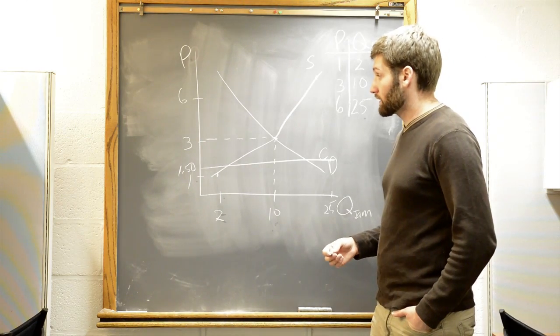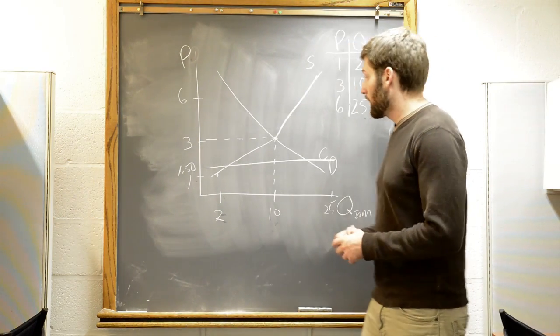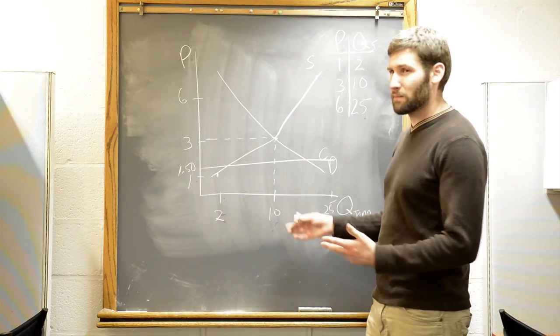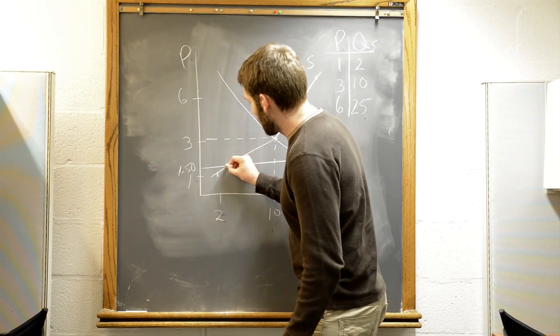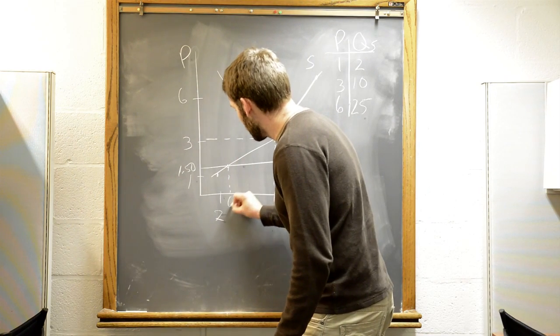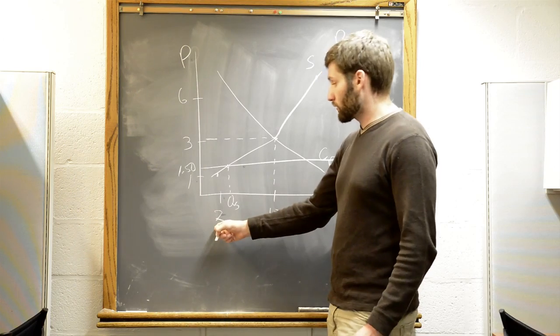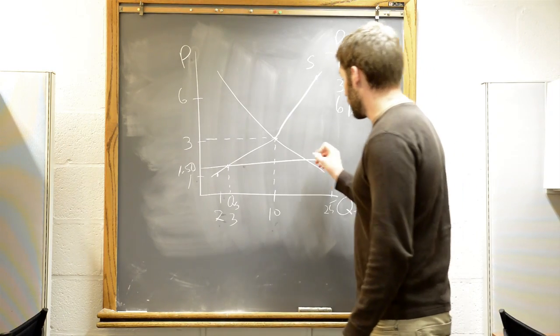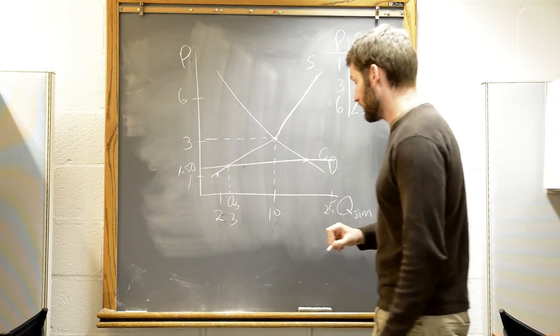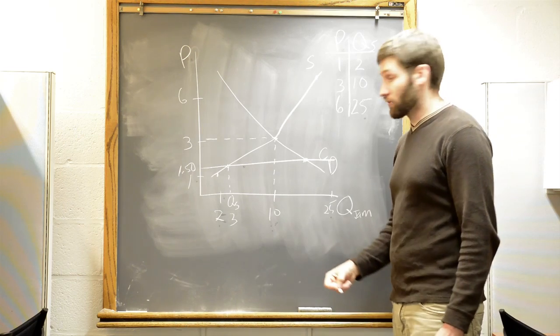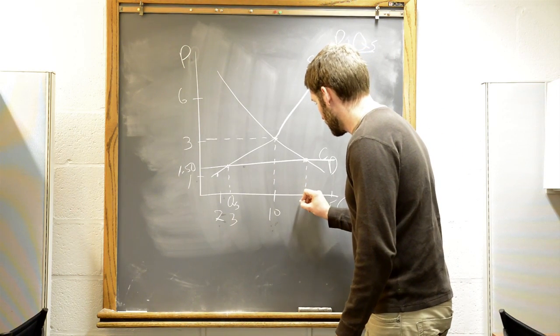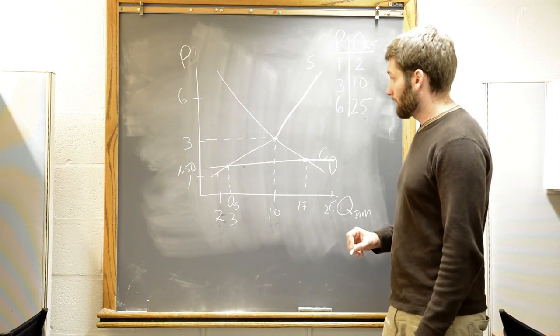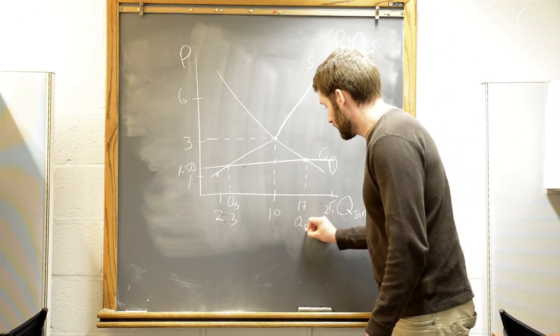So what we want to figure out is the amount supplied and the amount demanded. Here I'm just going to make up numbers, but it can really be anything that makes sense. Right here we have our quantity supplied. It's larger than 2, less than 10. I'm going to call it 3. Then we have our quantity demanded. Less than 25, larger than 10. I'm going to call it 17. And so this is our quantity demanded.